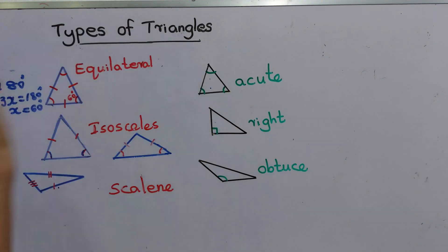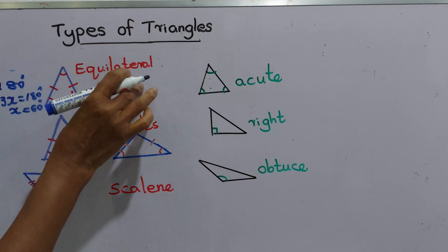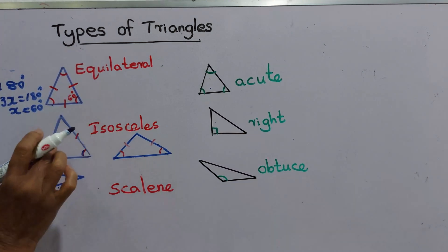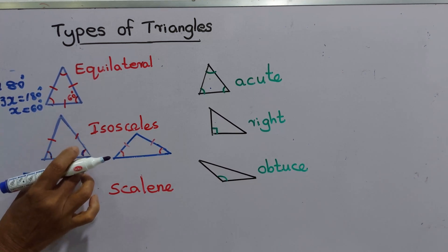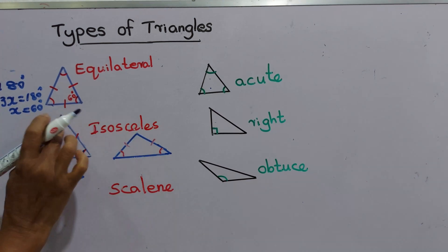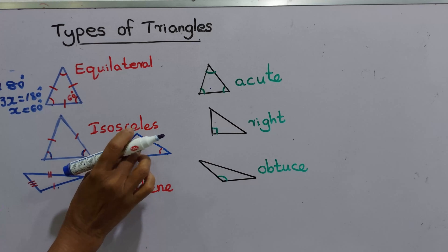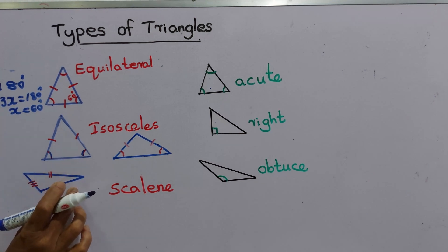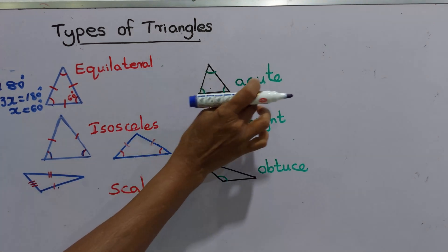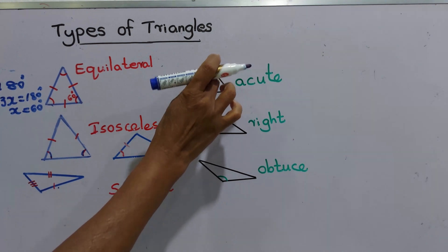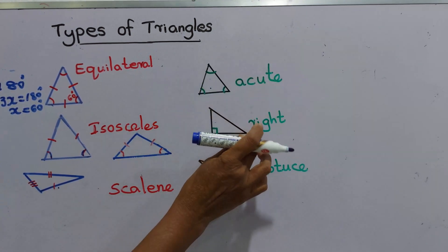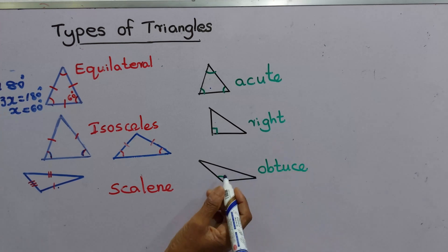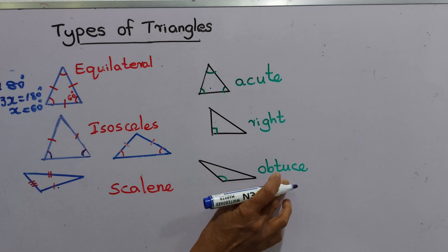So we have learned many types of triangles. In an equilateral triangle, all sides and all angles are equal. In an isosceles triangle, two sides are equal and the base angles are equal — there may be acute isosceles and obtuse isosceles triangles. In a scalene triangle, all side lengths are different. In an acute triangle, all three angles are acute. In a right triangle, there is one right angle. In an obtuse triangle, there is one obtuse angle.